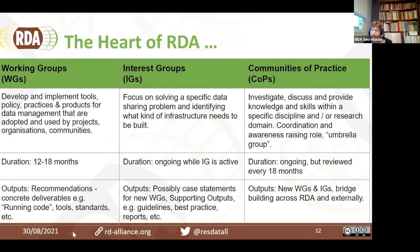For those in Australia, you may have heard of the 23 Research Data Things, which was an output from the Libraries for Research Data interest group a few years ago. ANDS actually took that up and ran a program within Australia about it.